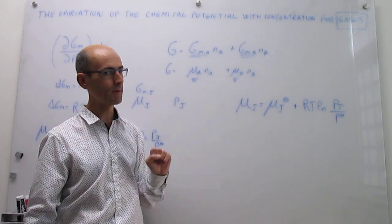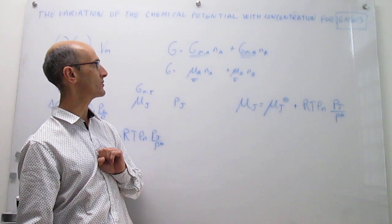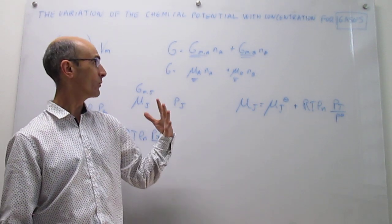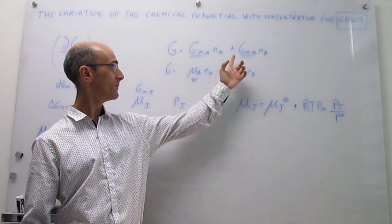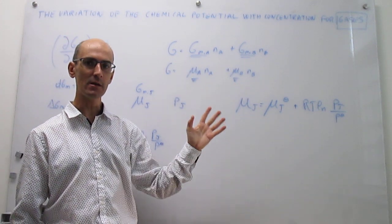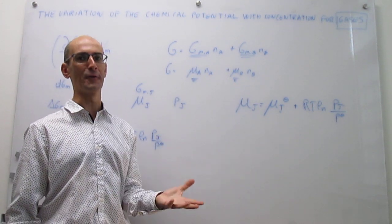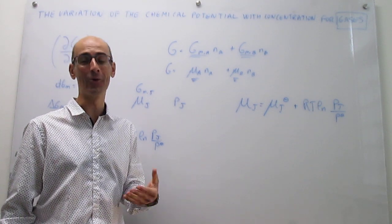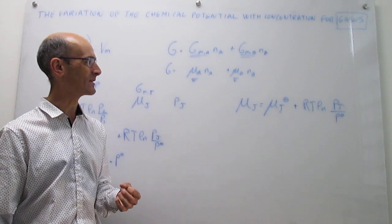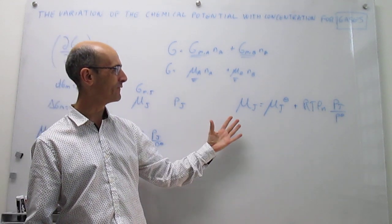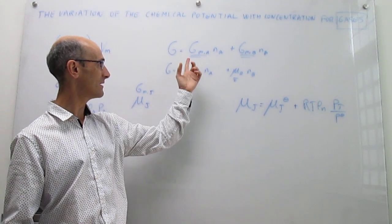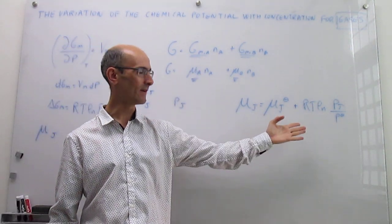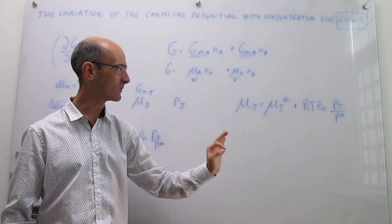So this is how the chemical potential changes with pressure, and that is exactly what we were trying to find. The partial molar quantities depend on concentration; for a gas, concentration is expressed in terms of partial pressure. We have now found how the molar Gibbs energy — the chemical potential — of a component depends on pressure.